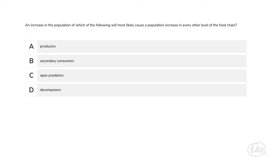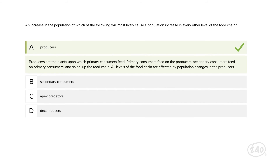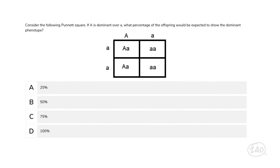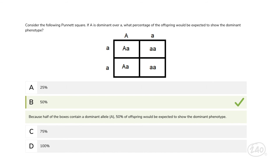Next up is the ecosystem section. An increase in the population of which of the following will most likely cause a population increase in every other level of the food chain? Producers are the plants upon which primary consumers feed. Primary consumers feed on the producers, secondary consumers feed on primary consumers, and so on up the food chain. All levels of the food chain are affected by population changes in the producers, so that choice is correct. And for genetics — consider a Punnett square where capital A is dominant over lowercase a. What percentage of the offspring would be expected to show the dominant phenotype? Any organism containing a dominant gene will show the dominant trait. Two of the four boxes contain a dominant gene, so 50% of offspring would be expected to show the dominant phenotype.